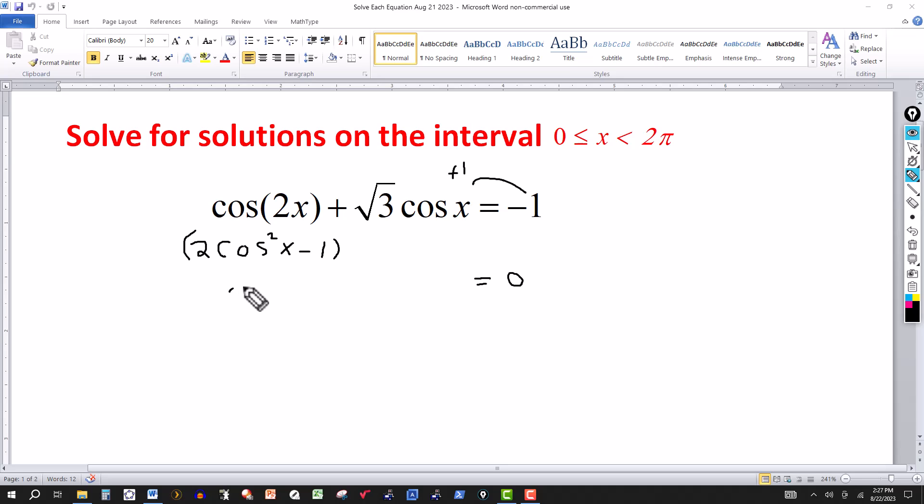And then this will give me two cosine squared of x plus the square root of three cosine x. So now I just have x and x instead of 2x and x, and the right side is zero.